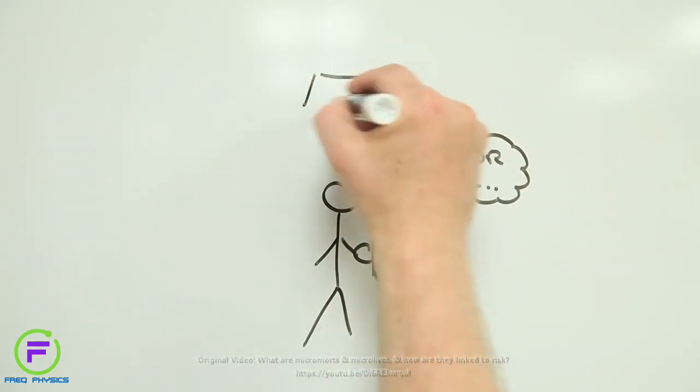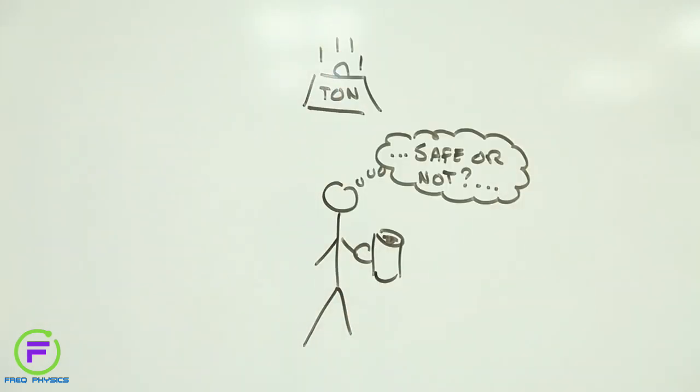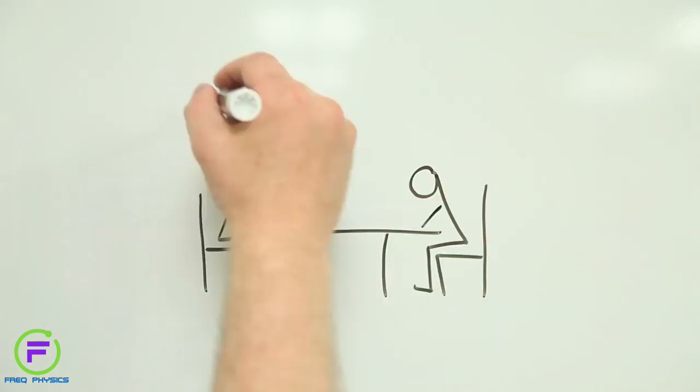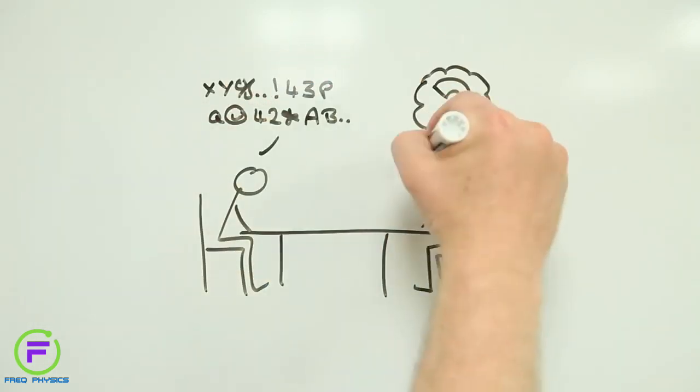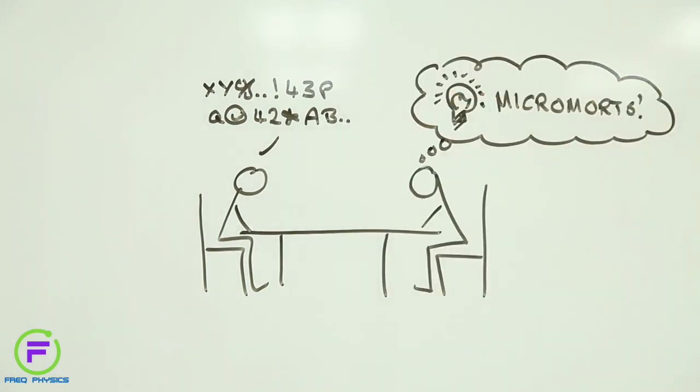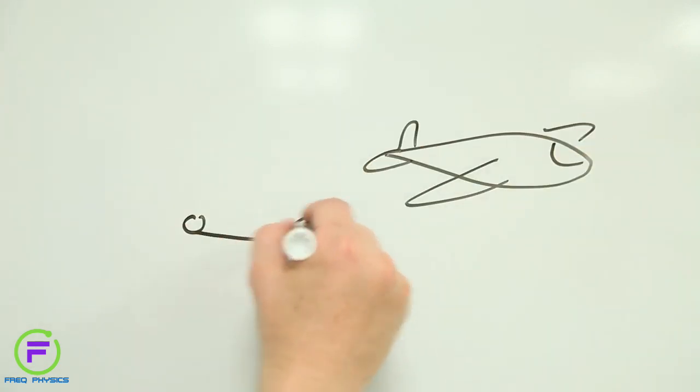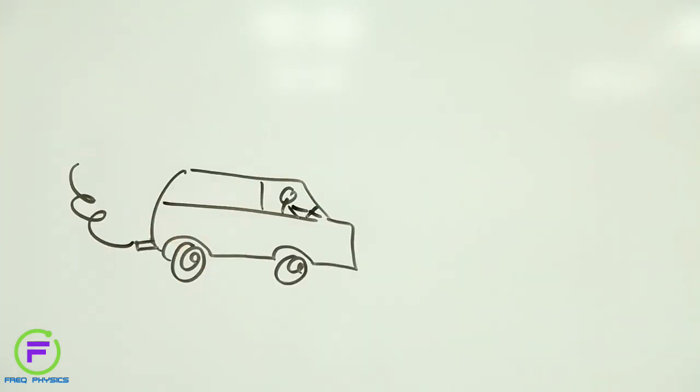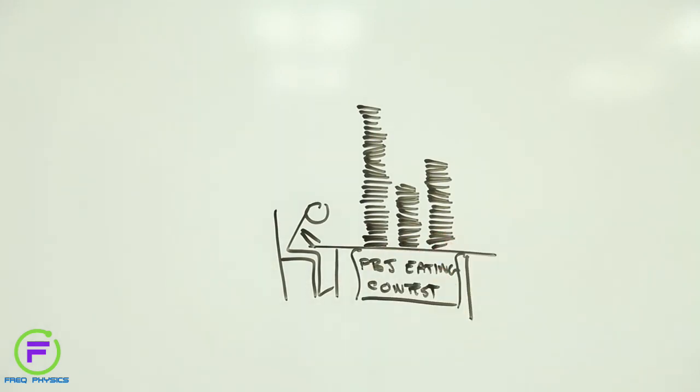How do you know how likely something is to kill you? In the 1970s, Stanford professor Ronald Howard came up with the Micromort as a rather neat way of putting a number on the chances of dying while engaged in some activity, like skydiving, or driving down the street, or eating a peanut butter and jelly sandwich.